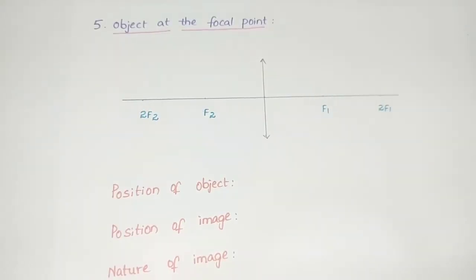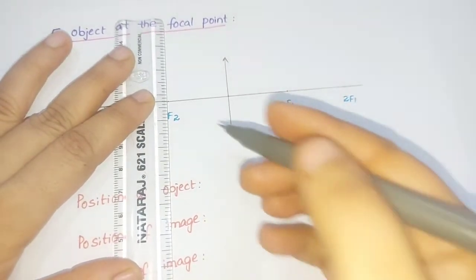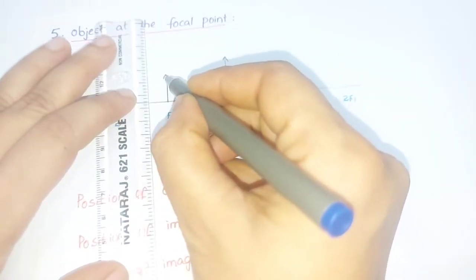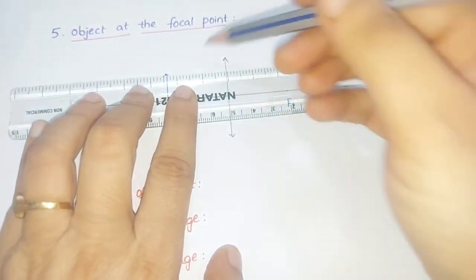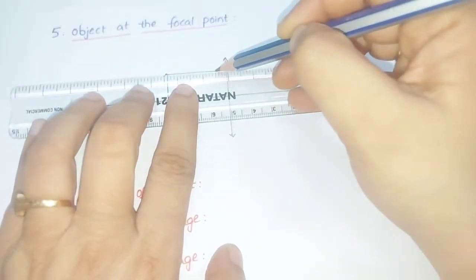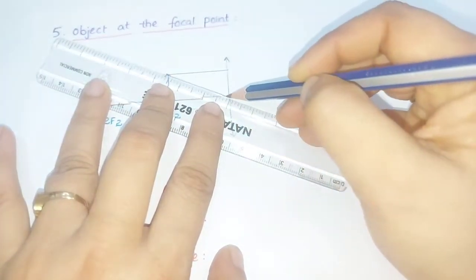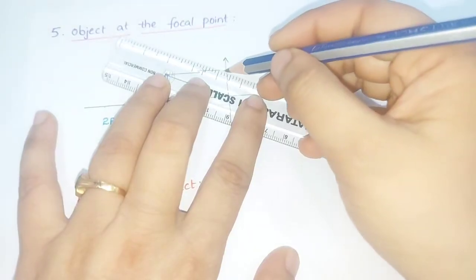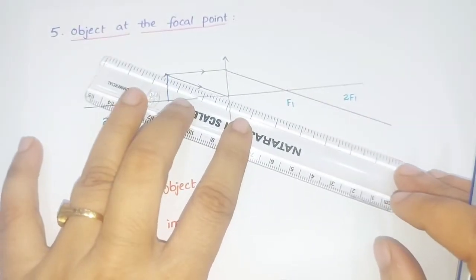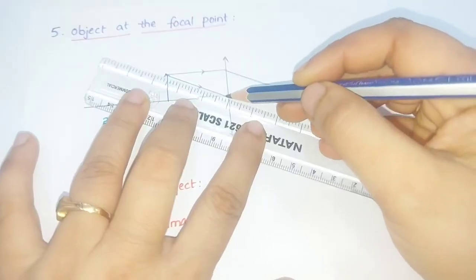Now we go to the fifth situation: the object placed at the focal point. We draw an object at the focal point and take two light rays — one passing parallel to the principal axis and the other passing through the optic center. The light ray parallel to the principal axis passes through the focus, and the ray through the optic center is undeviated.